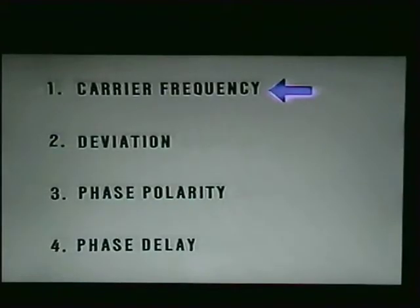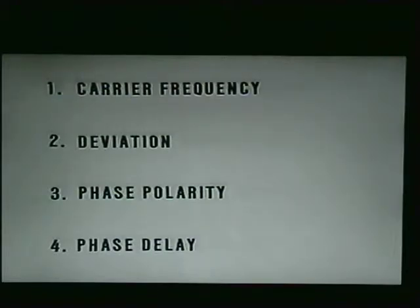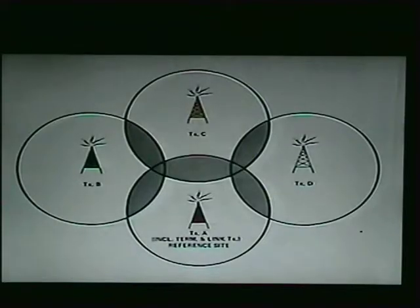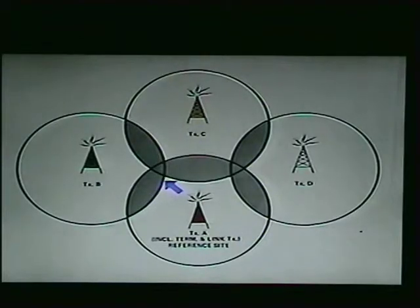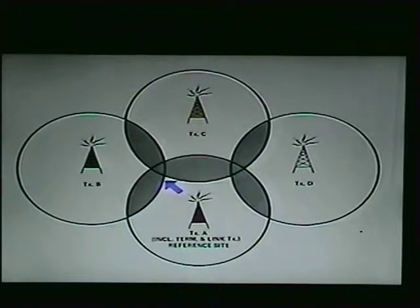To help you accomplish this task, there is an established procedure for simulcast system optimization known as the two-receiver method. When implemented properly, you'll be able to properly adjust four parameters that are critical to good simulcast system operation: carrier frequency, deviation, phase polarity, and phase delay. The proper setup of these four parameters is essential in the areas of the system where multiple transmitter overlap occurs, as illustrated by the shaded areas in Figure 1. If adjacent stations are not matched and optimized correctly, the result will be distorted or seriously degraded reception in these overlapping, or what are termed, no-capture zones.